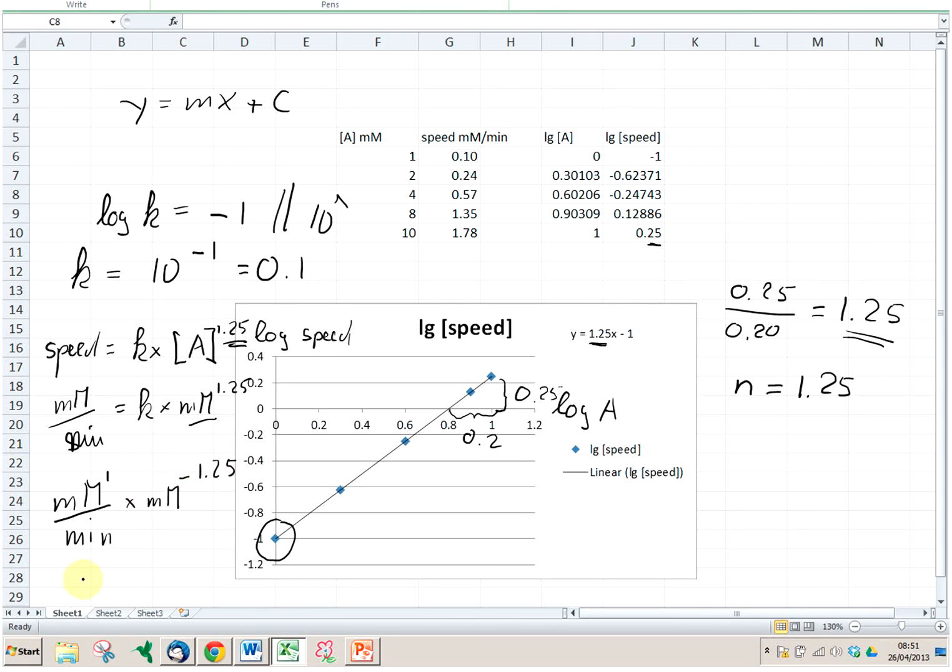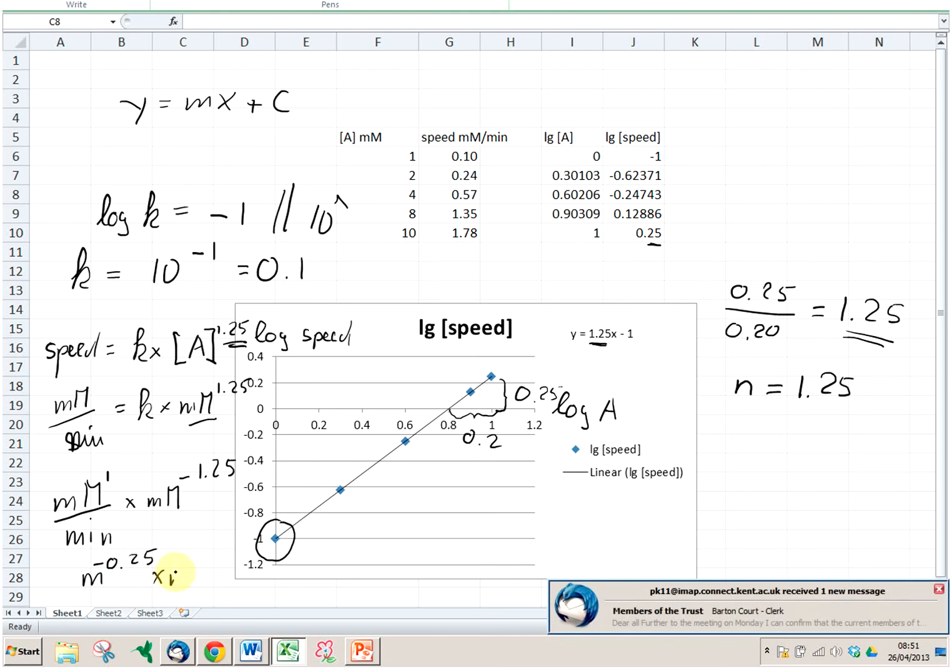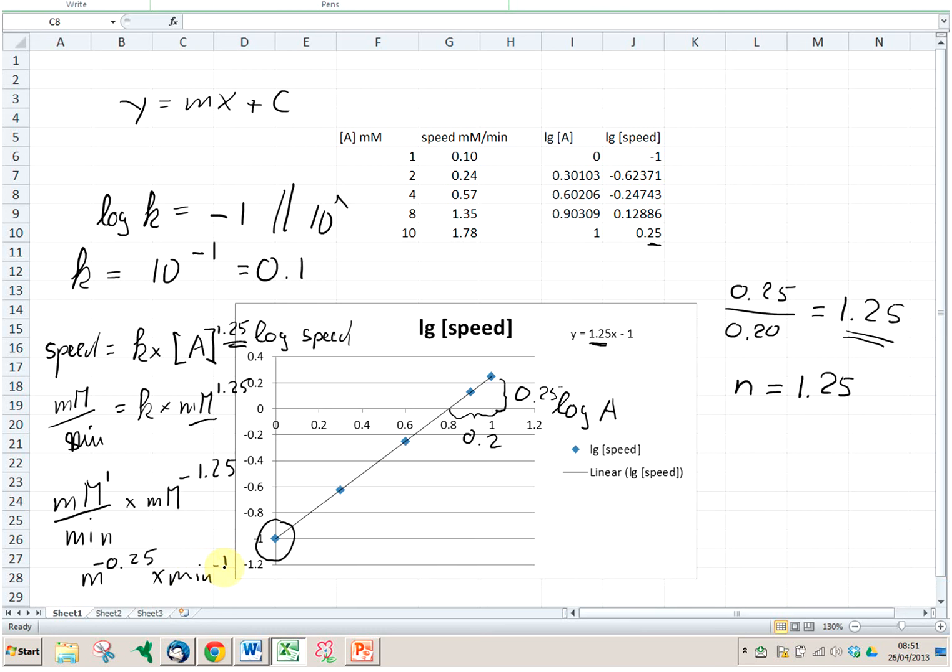And the unit, therefore, if we put these together, we get millimolar to the power of minus 0.25 times minute to the minus 1. So hopefully this makes sense and it shows you how you can actually calculate from data, how you can calculate the rate order of a reaction, how you can calculate the rate constant of a reaction here, and how you can determine the units for the rate constant.